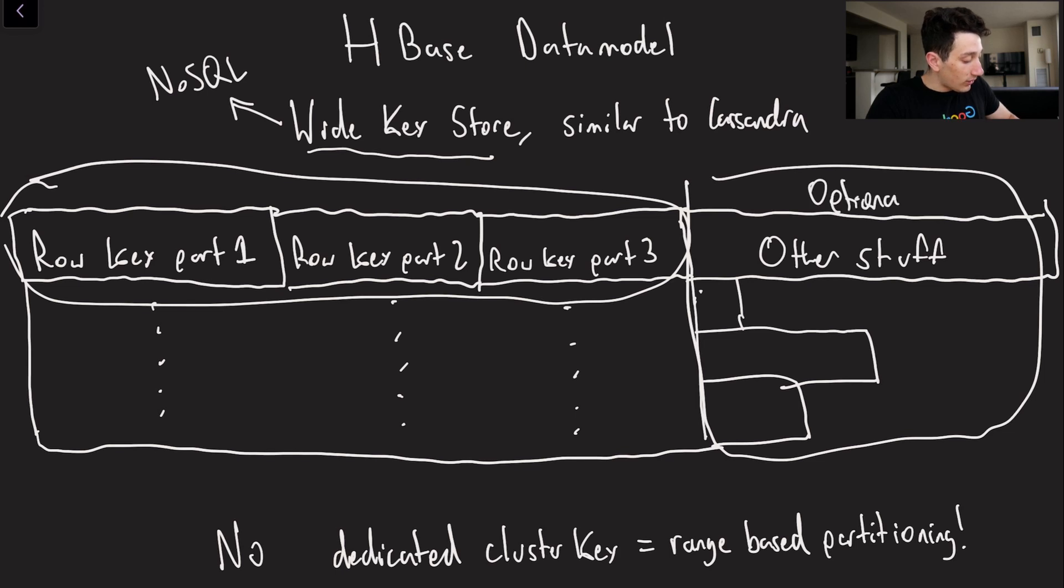And our row key is basically what determines in HBase how things are getting partitioned and also the order in which they're stored. Like I mentioned, everything is done by range-based partitioning. So we're not taking the hash of this key, we're literally just partitioning the data right down the segment as if it were ordered.